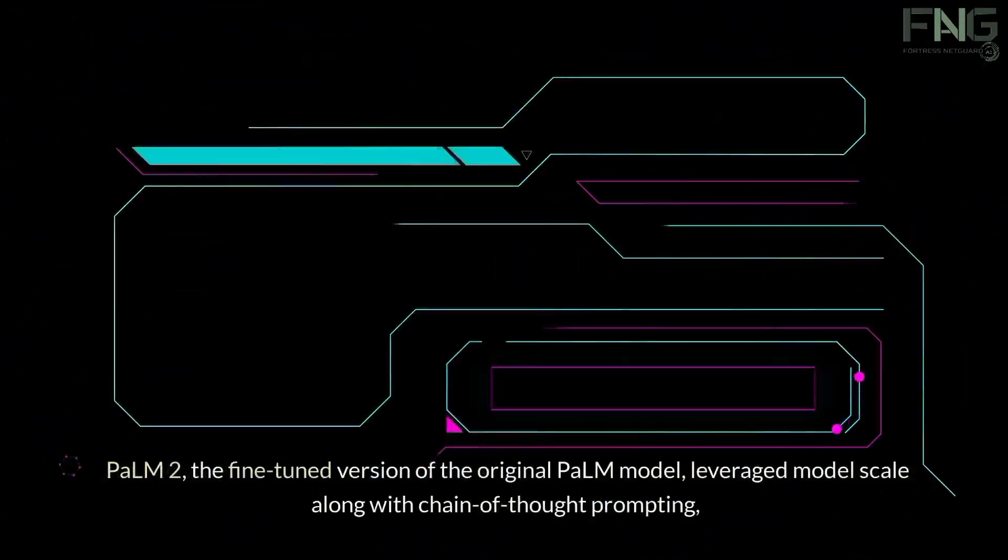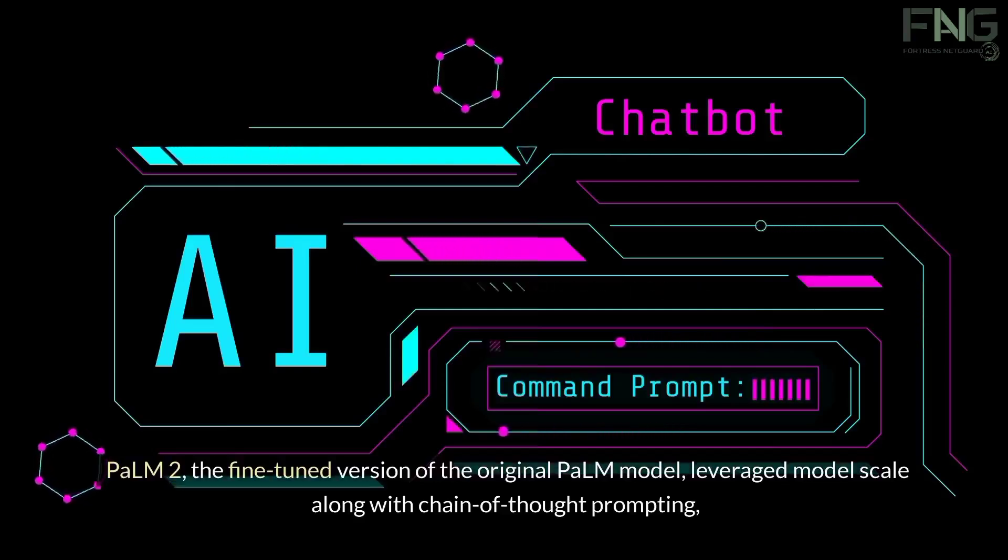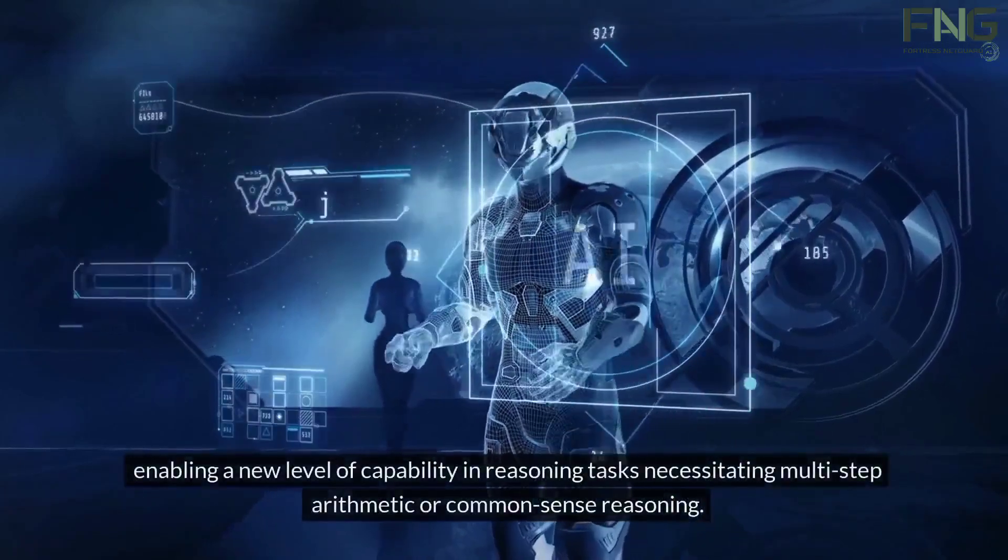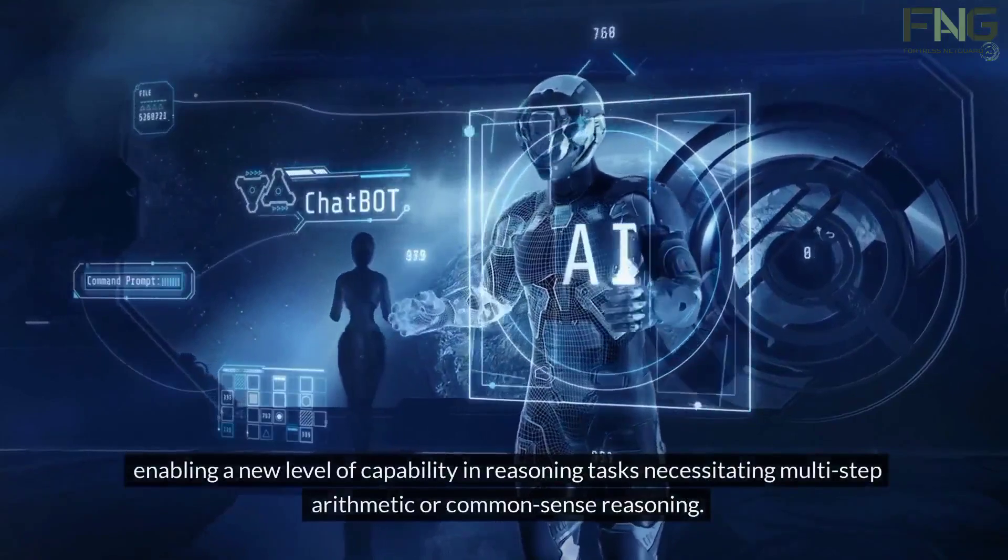Palm 2, the fine-tuned version of the original Palm model, leveraged model scale along with chain-of-thought prompting, enabling a new level of capability in reasoning tasks, necessitating multi-step, arithmetic, or common-sense reasoning.